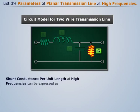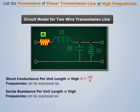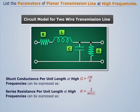Shunt conductance per unit length at high frequencies can be expressed as σW/A. Series resistance per unit length at high frequencies can be expressed as shown. Thus parameters of planar transmission line at high frequencies are defined.